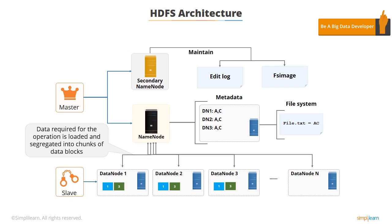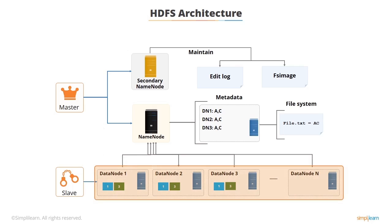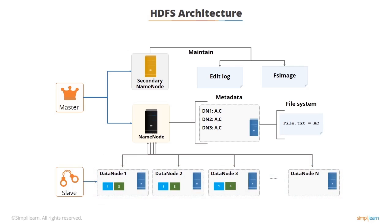HDFS exposes a file system namespace and allows user data to be stored in files. A file is split into one or more blocks, stored and replicated in the slave nodes, known as the data nodes. The data blocks are then distributed to the data node systems within the cluster, ensuring that replicas of the data are maintained.